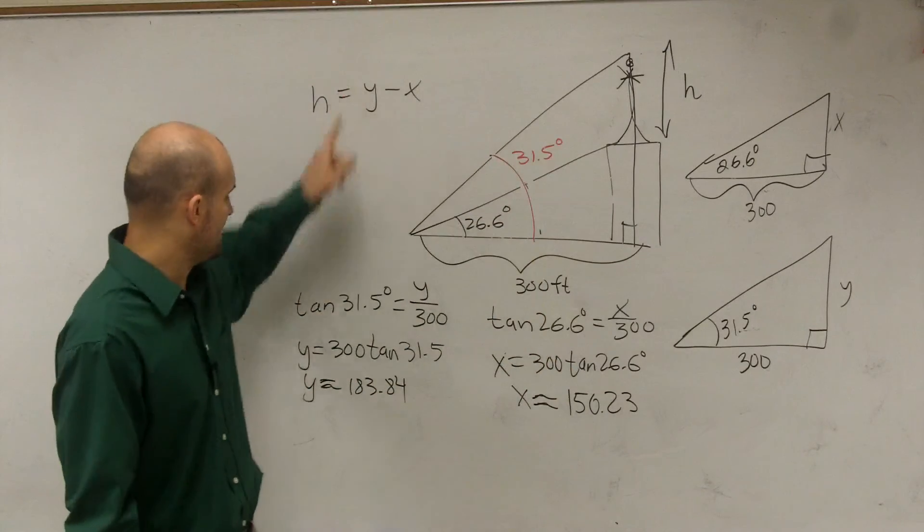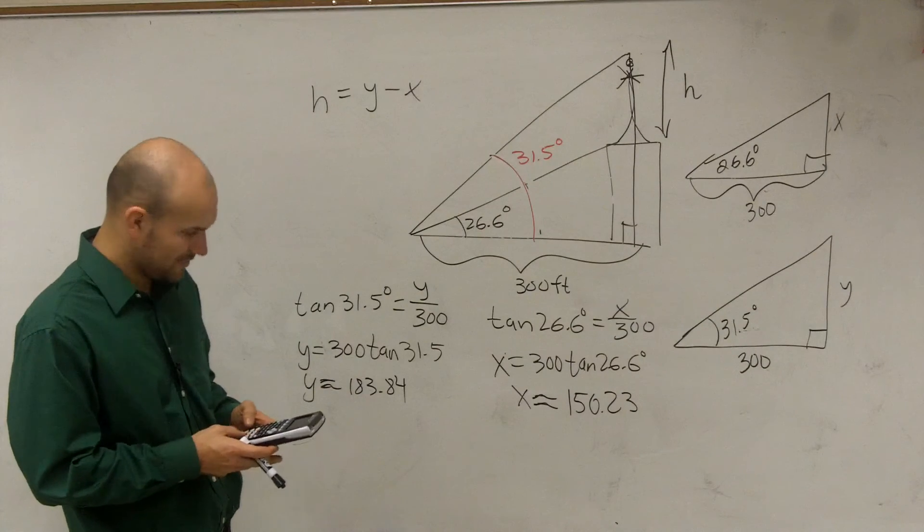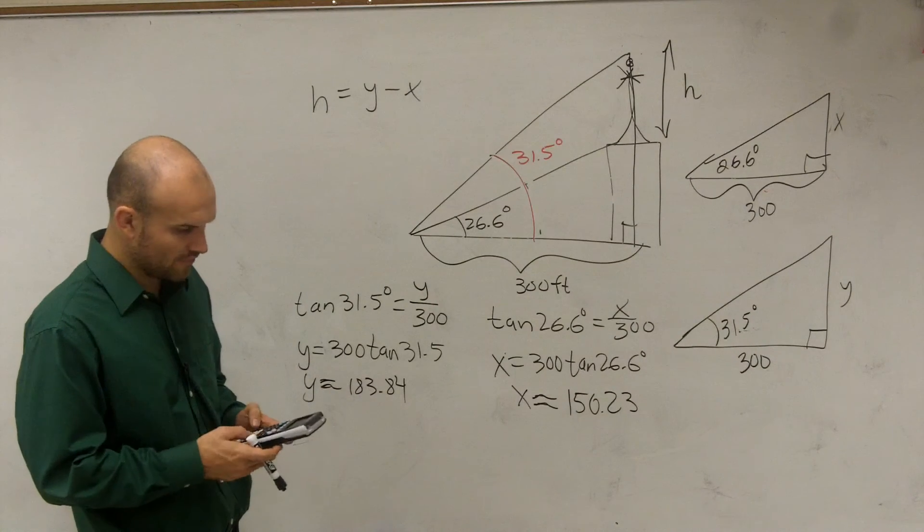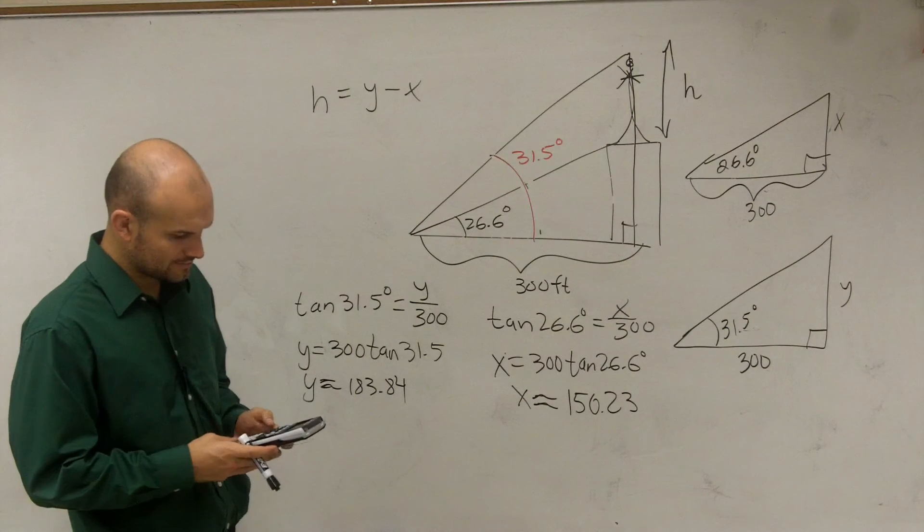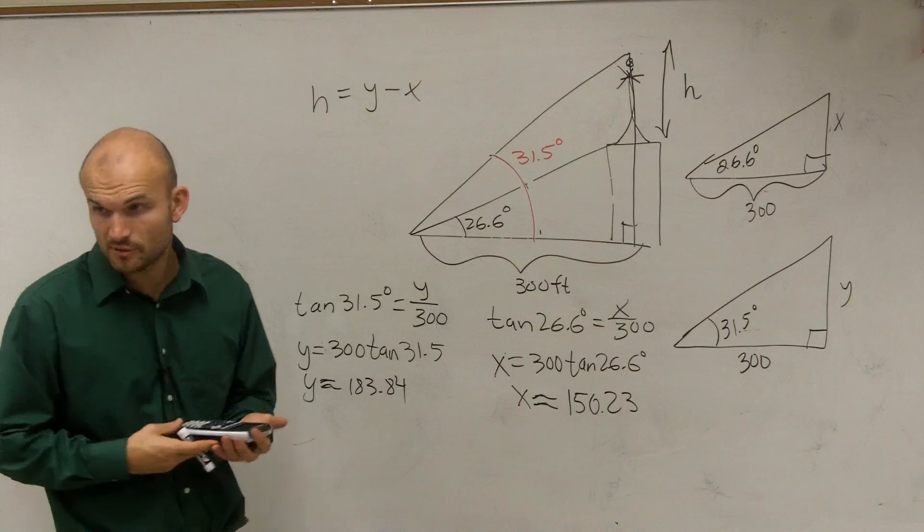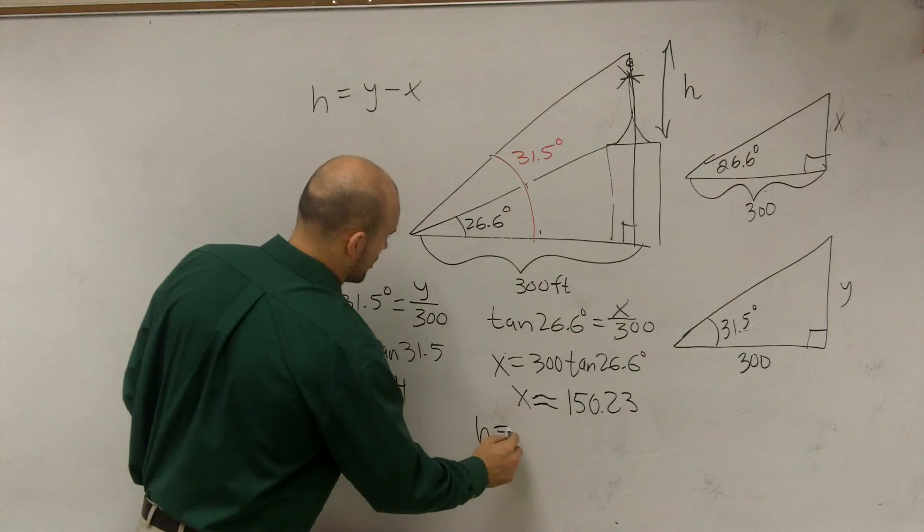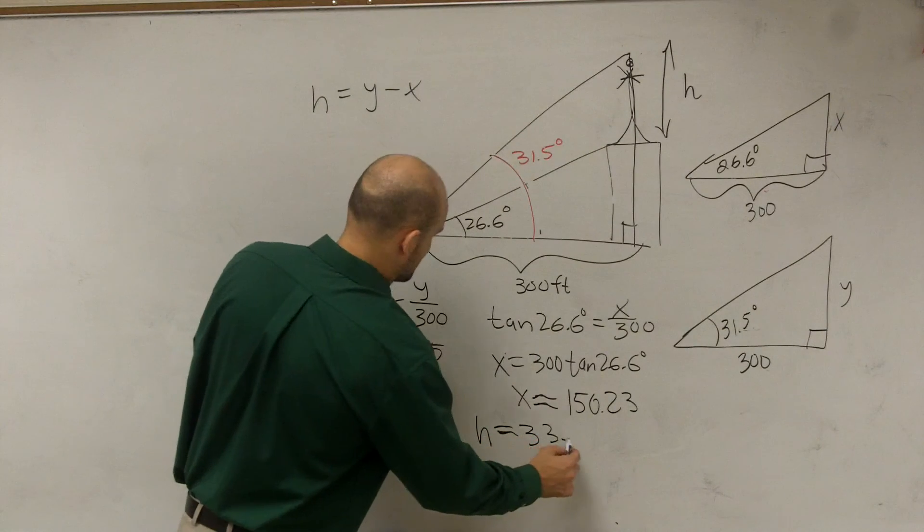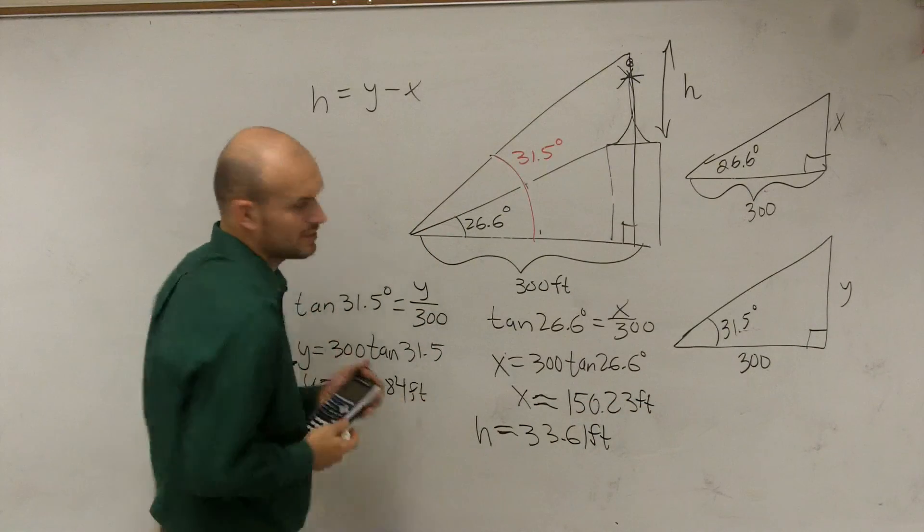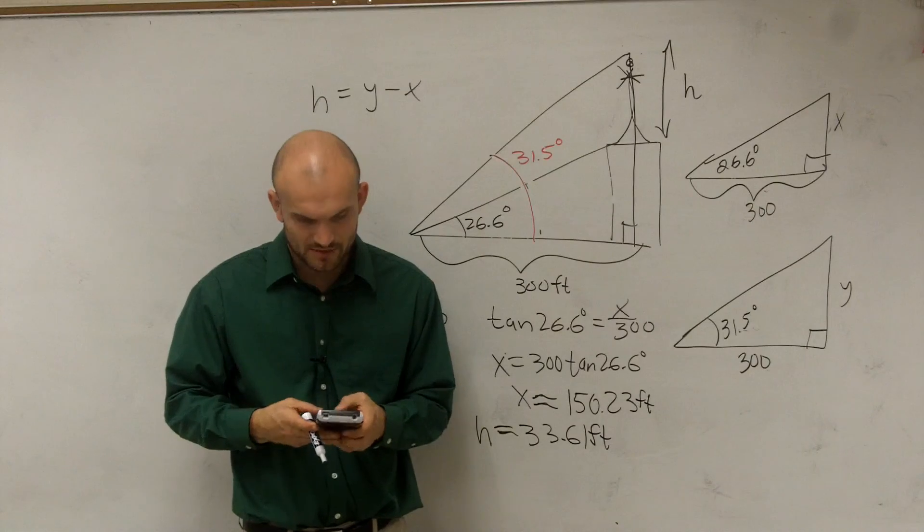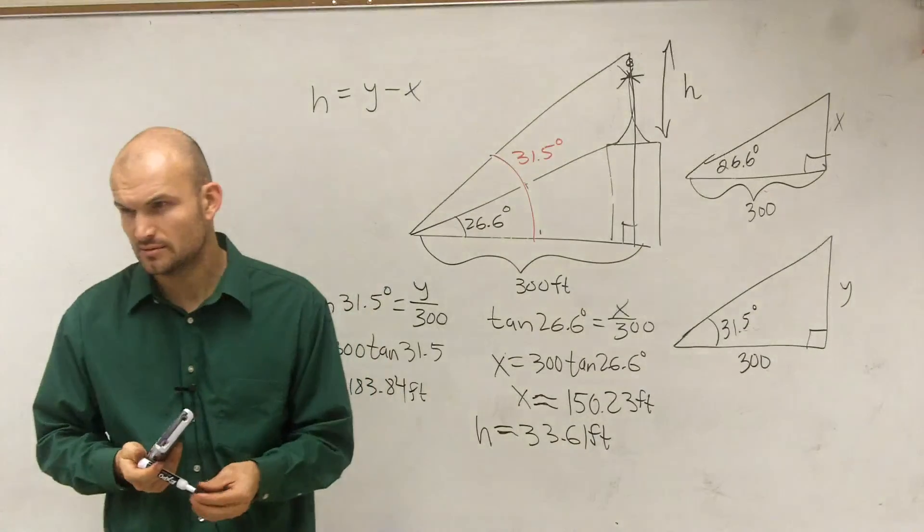Well let's go ahead and take a look. So remember, to find h we do y minus x. So I do 183.84 minus 150.23, and 33.61 feet, right? So h is going to equal approximately, because I've been doing estimating, 33.61 feet. And if you want to check that in decimals or for inches, you could just multiply by 12 and get 403 inches.